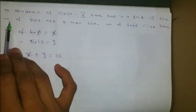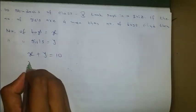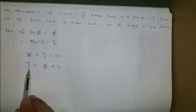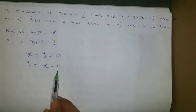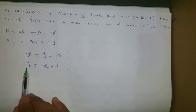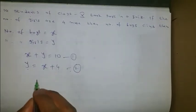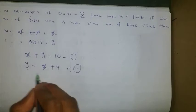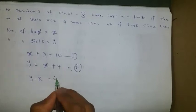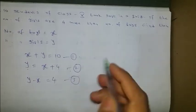If the number of girls are 4 more than the number of boys, then y equals x plus 4. This is the second equation. Rearranging, we get y minus x equals 4, which I am writing as equation 3. Now I will solve the first equation and equation 3 together.